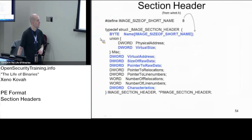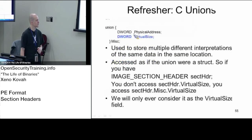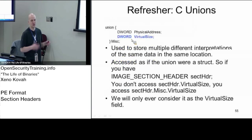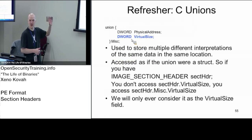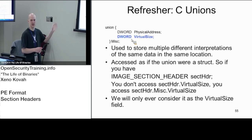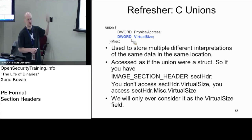IMAGE_SECTION_HEADER. There are about five things in here that we actually care about. There's a union here between physical address and virtual size in this MISC field. A union is not like a normal data structure where you've got this value and then that value — a union is two different names for the exact same data. There's one DWORD, and you can refer to it as MISC.PhysicalAddress or MISC.VirtualSize. We're always going to refer to it as MISC.VirtualSize because physical address is never really used on Windows — it may be something left over or used on other architectures.